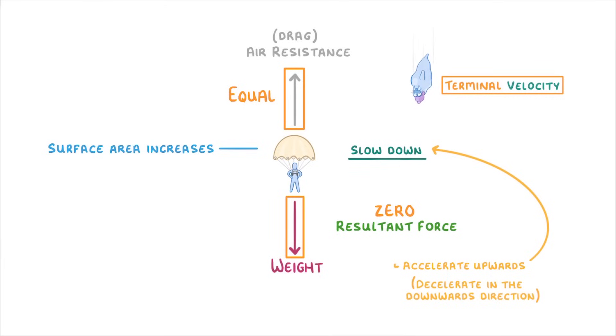This new terminal velocity will actually be lower than the last one. Because remember the person slowed down. So the new terminal velocity, with the parachute in place, will be lower than the terminal velocity without the parachute.